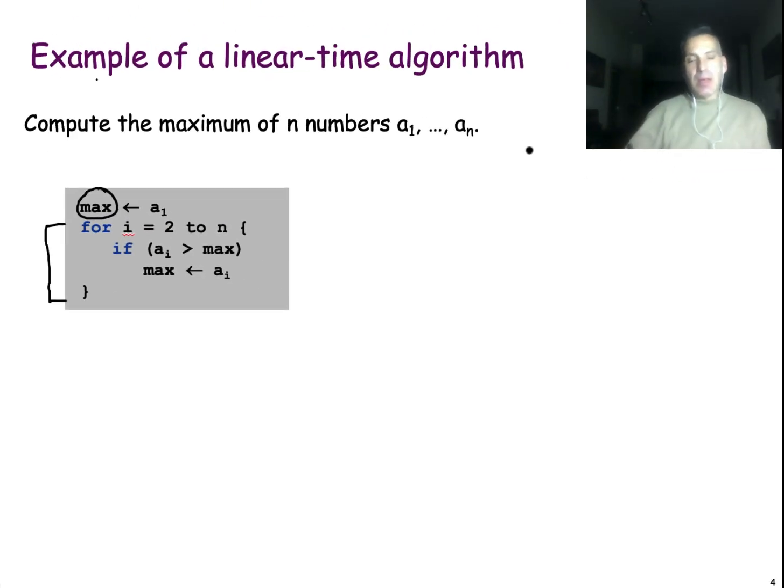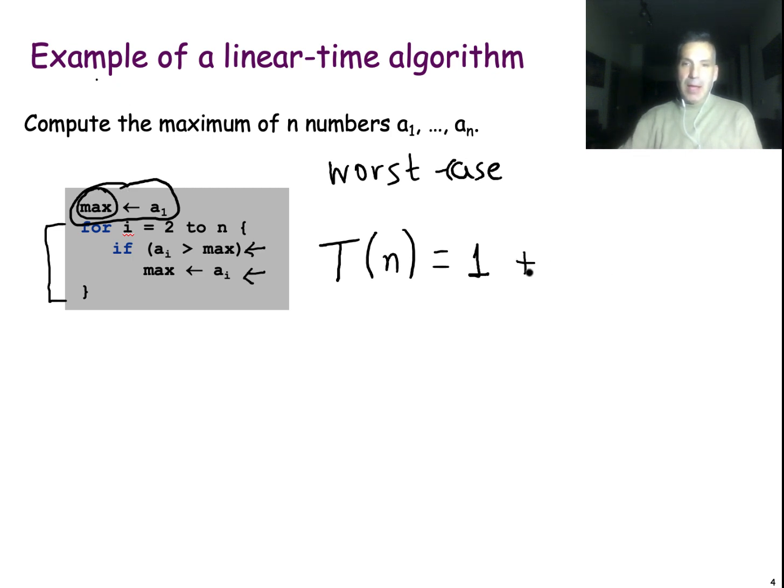Let's now examine the running time of this algorithm. The running time will be denoted by T. Of course, it is a function of n in this case. And it is important to remember that we're always interested in the worst case. So in the worst case, in each of these iterations of the for loop, we will perform both this operation as well as this operation. So we will have one operation for the initial assignment of the max variable plus n minus one iterations of the for loop times two operations because we have these two different operations happening within each iteration. Of course, this is a linear function of n. And this is why we say that this algorithm is a linear time algorithm.